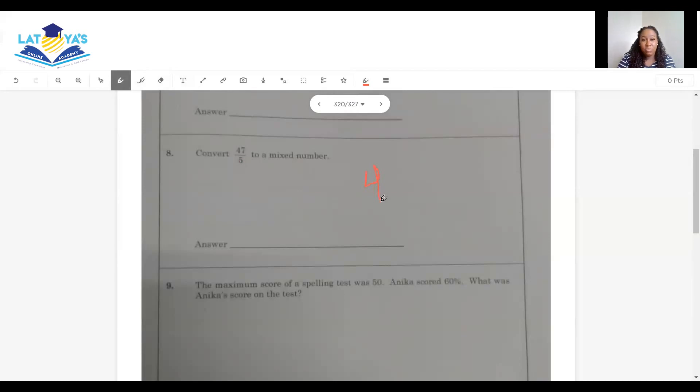Convert 47/5 to a mixed number. So 47 over 5, I need to divide. 5 into 47 is 9. 9 fives are 45, with a remainder of 2 over 5. So my answer is 9 and 2/5.